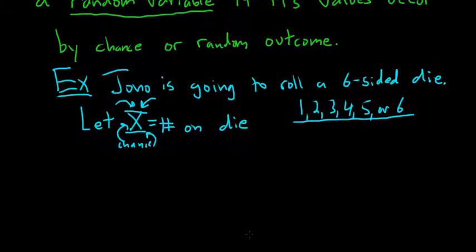So there are two types of random variables that we're mainly concerned with. The first one is called discrete. So a discrete random variable, the definition is that it takes on a finite or countable number of values.